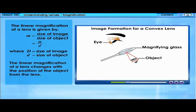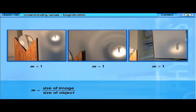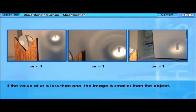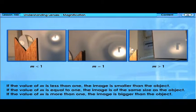The linear magnification M is the ratio of the size of the image to the size of the object. The linear magnification of a lens changes with the position of the object from the lens. M equals size of image over size of object. If M is less than 1, the image is smaller than the object. If M equals 1, the image is the same size as the object. If M is more than 1, the image is bigger than the object.